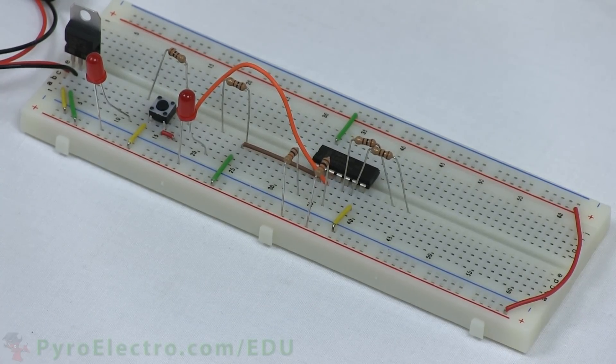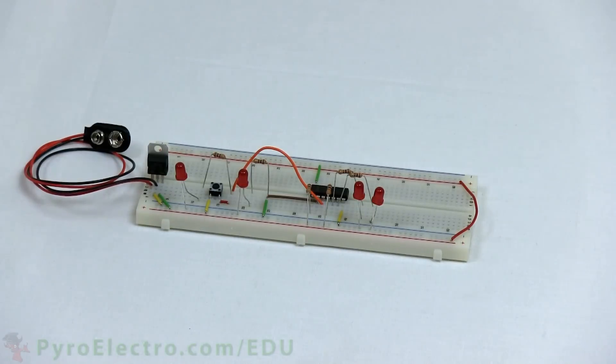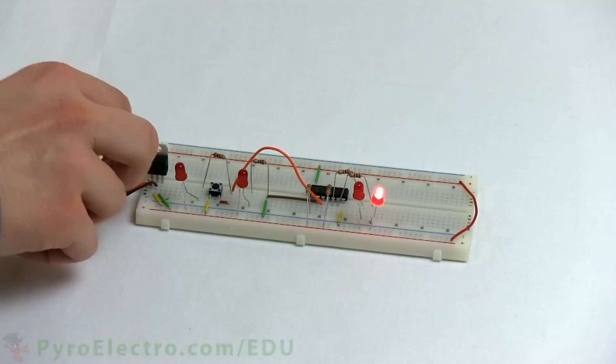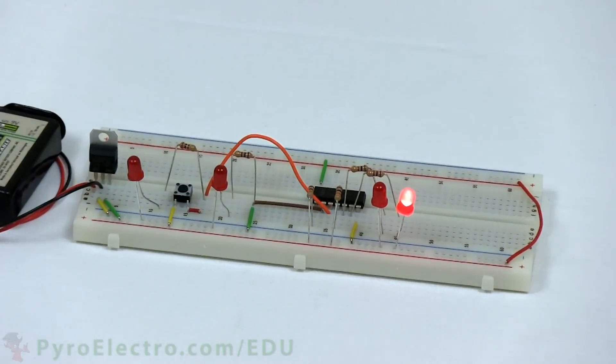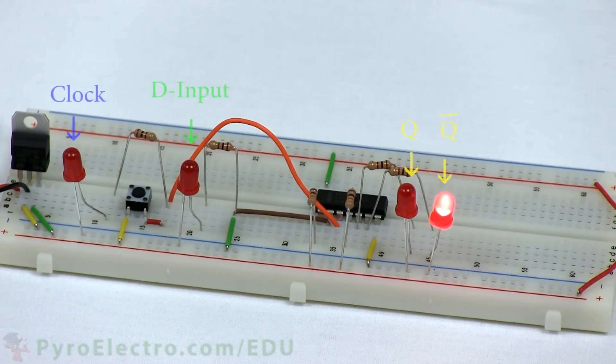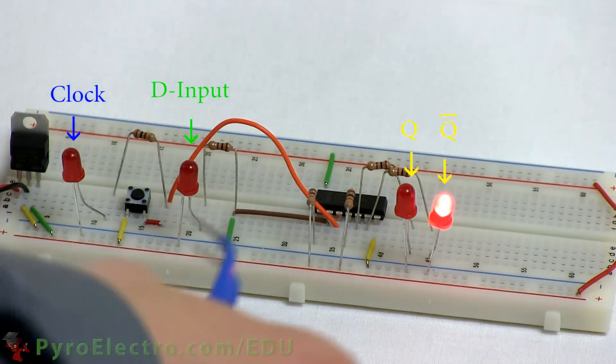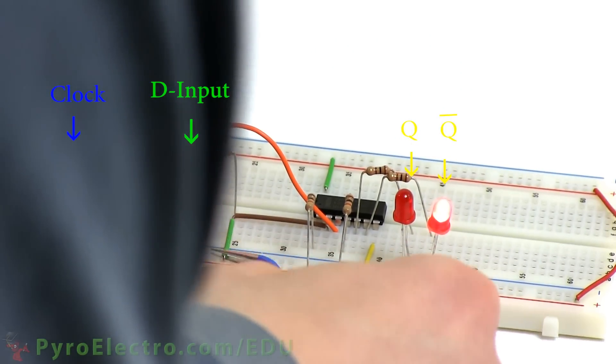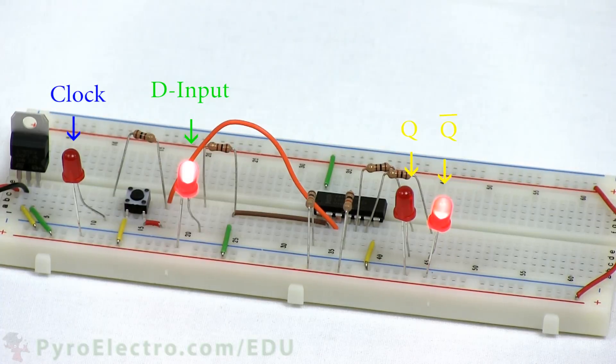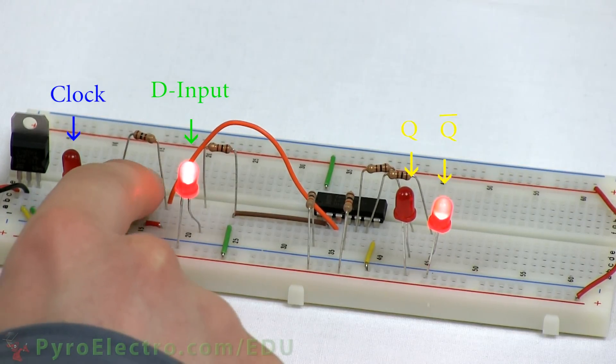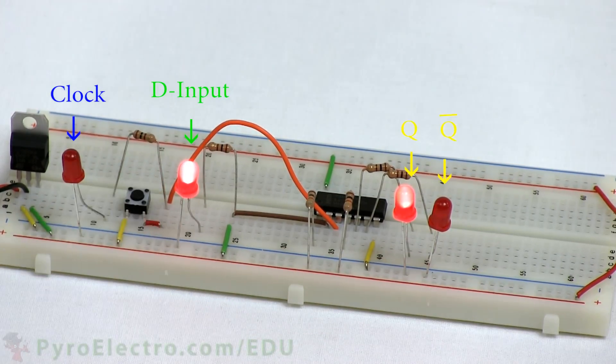The push button is used again with a pull-down resistor to act as the clock changing from logic 0 to logic 1, and with the circuit built, first we'll test to see what happens when the input is connected to logic 1, and the clock is triggered. With a push of the button, the data is transferred from the D input pin to the Q output pin, as the truth table says it should be.